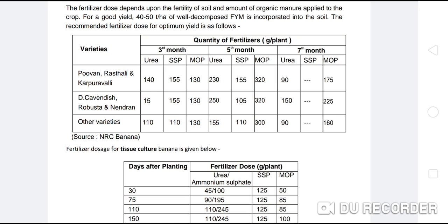At 5 months for Puvvan and similar varieties: Urea 230 g, MOP 320 g. For Dwarf Cavendish, Robusta, Nendran at 5 months: Urea 250 g, SSP 105 g, MOP 320 g. For other varieties at 5 months: Urea 150 g, SSP/Phosphate 110 g, MOP 300 g. At 7 months for Puvvan varieties: Urea 90 g, SSP is stopped, MOP increased to 175 g. For Dwarf Cavendish/Robusta/Nendran: Urea 150 g, SSP not given, MOP 225 g. For other varieties: Urea 90 g, SSP not given, MOP 60 g.